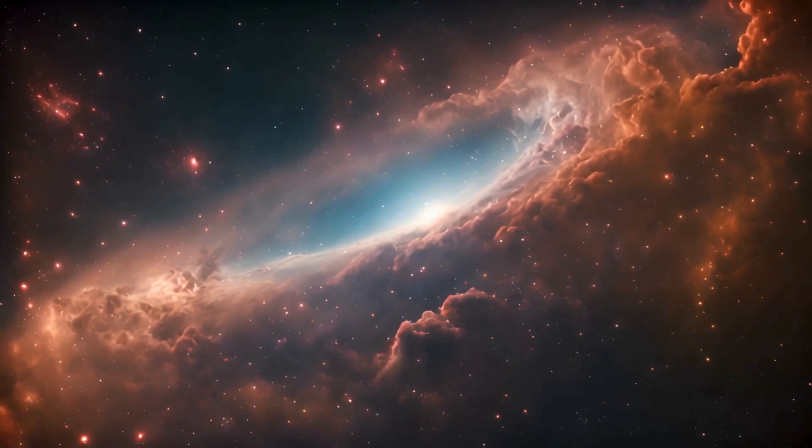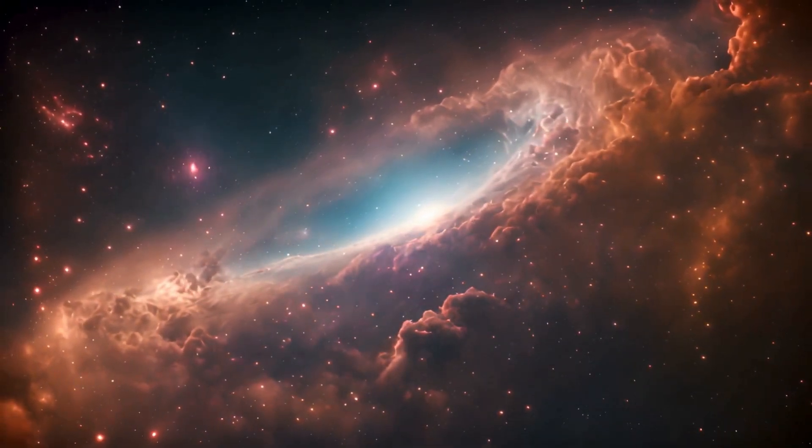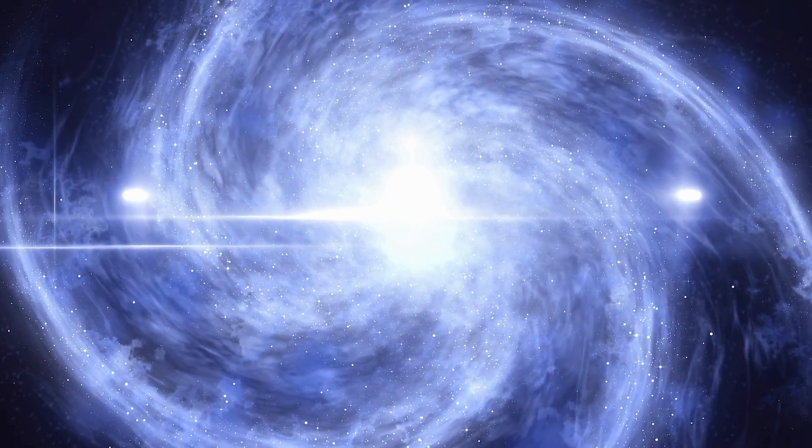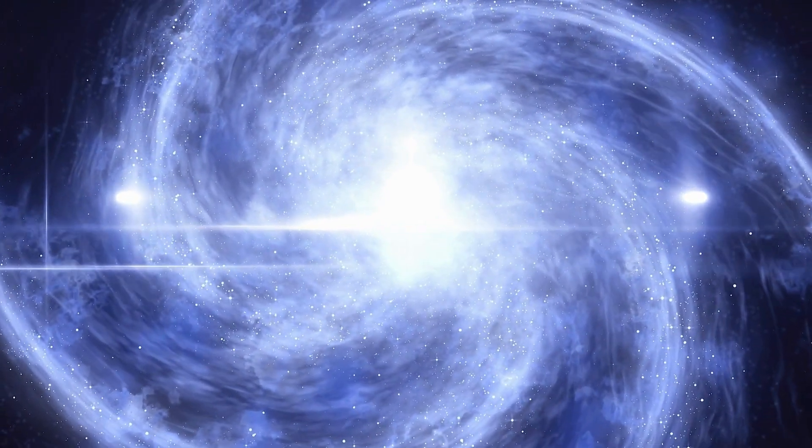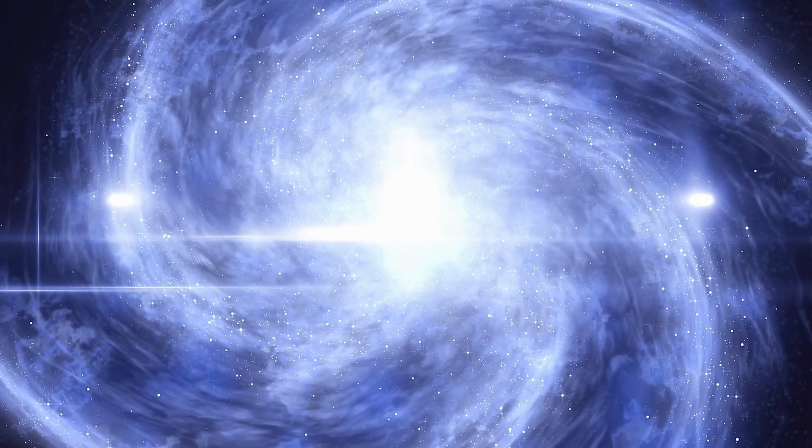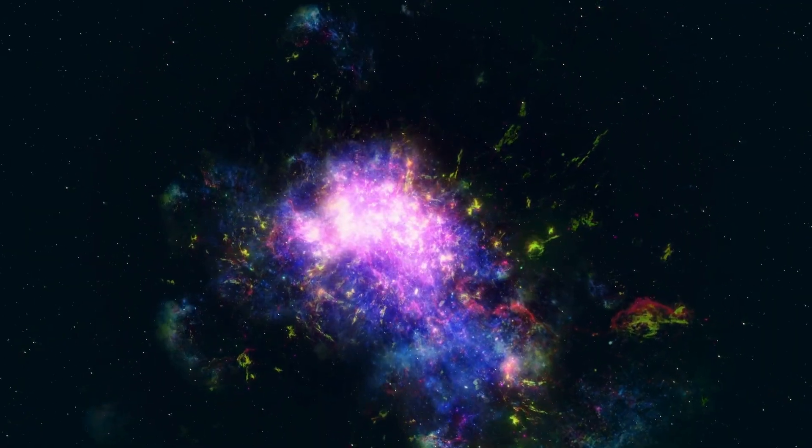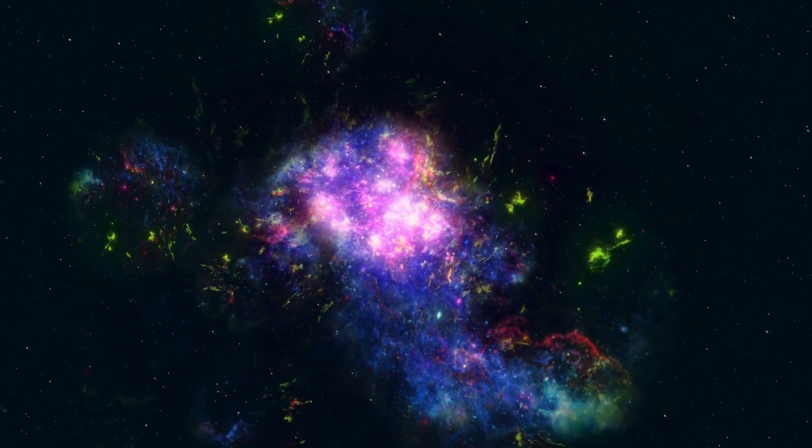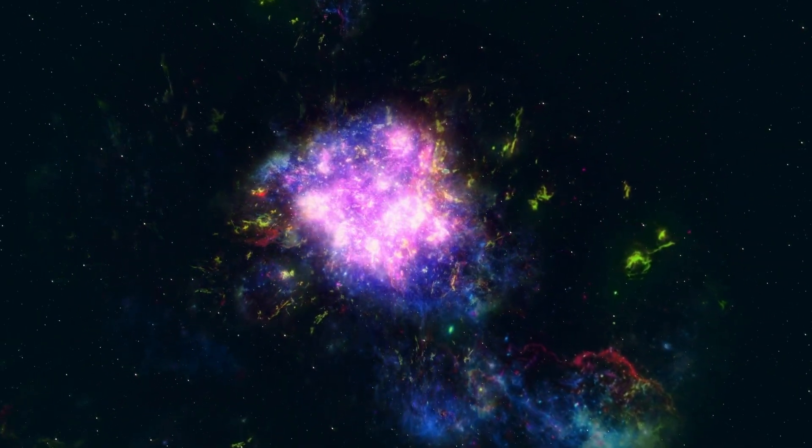Betelgeuse also boasts a magnetic field that is a thousand times stronger than that of the sun. This field is why, when viewed through a telescope, the gases on the surface of Betelgeuse appear to be in loops or arcs. Betelgeuse has a surface temperature of about 3,500 Kelvin. This low temperature contributes to the low energy emitted by the star and its dim red color.